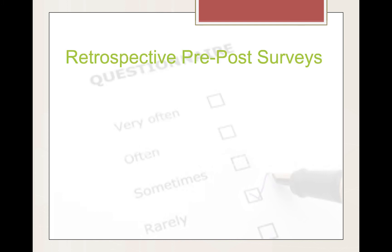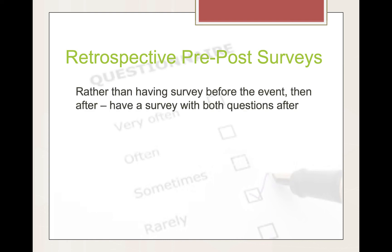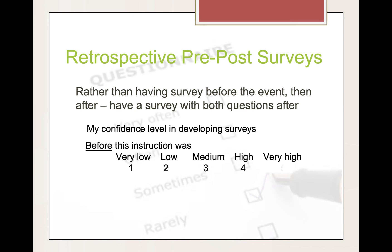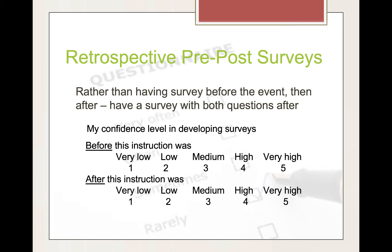Retrospective pre-post surveys are very interesting and may be new to you. Rather than having a survey before an event and then after, you put both sets of questions after. For example: 'My confidence level in developing surveys before this instruction was...' and 'after this instruction was...' both on a scale from very low to very high. This shows how much they grew. Sometimes if participants think they know something very well before the event, they may rate themselves higher than they actually will after instruction. So this can be a very useful type of survey.